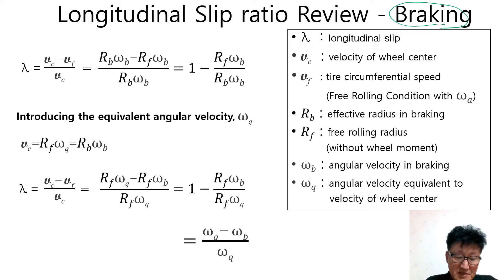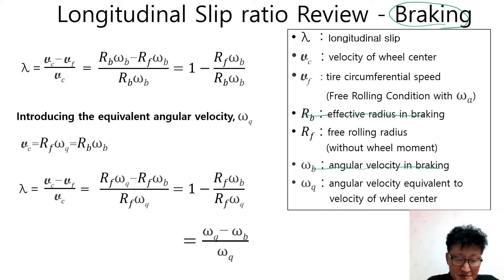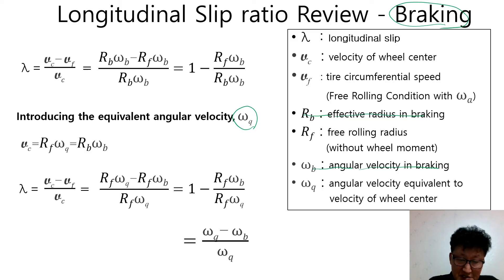In braking, new symbols are: R_B stands for effective radius in braking, and Omega_B stands for angular velocity in braking. Introducing the equivalent angular velocity Omega_Q, we can express the slip ratio in terms of angular velocity. If the braking force is big enough to slide the wheel without wheel rotation, the slip ratio is equal to 1.